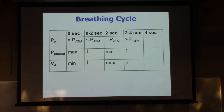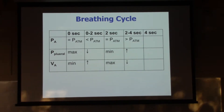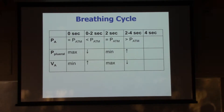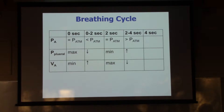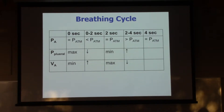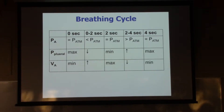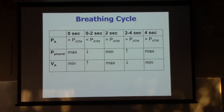At four seconds, we've already finished exhaling and haven't started inhaling yet - which should sound familiar. It's the same as at time equals zero seconds. We're going to start and end at the same place in the cycle. The pressure in the alveoli is equal to atmospheric pressure. Interpleural pressure is at its maximum. And the volume in the alveoli is at its minimum - we've put all the air out we're going to.